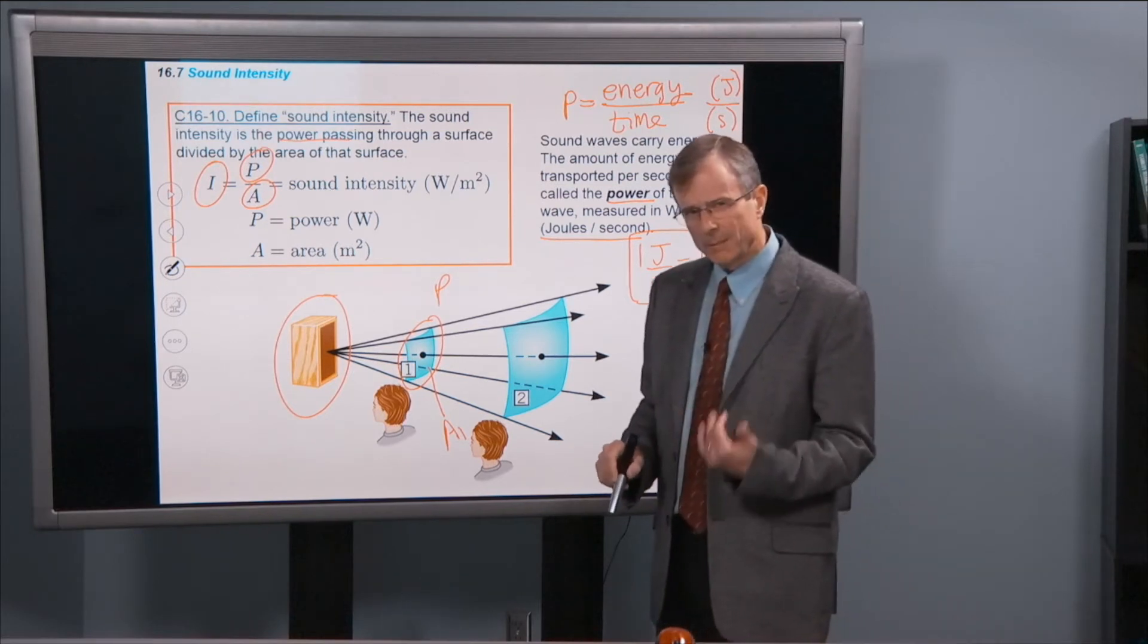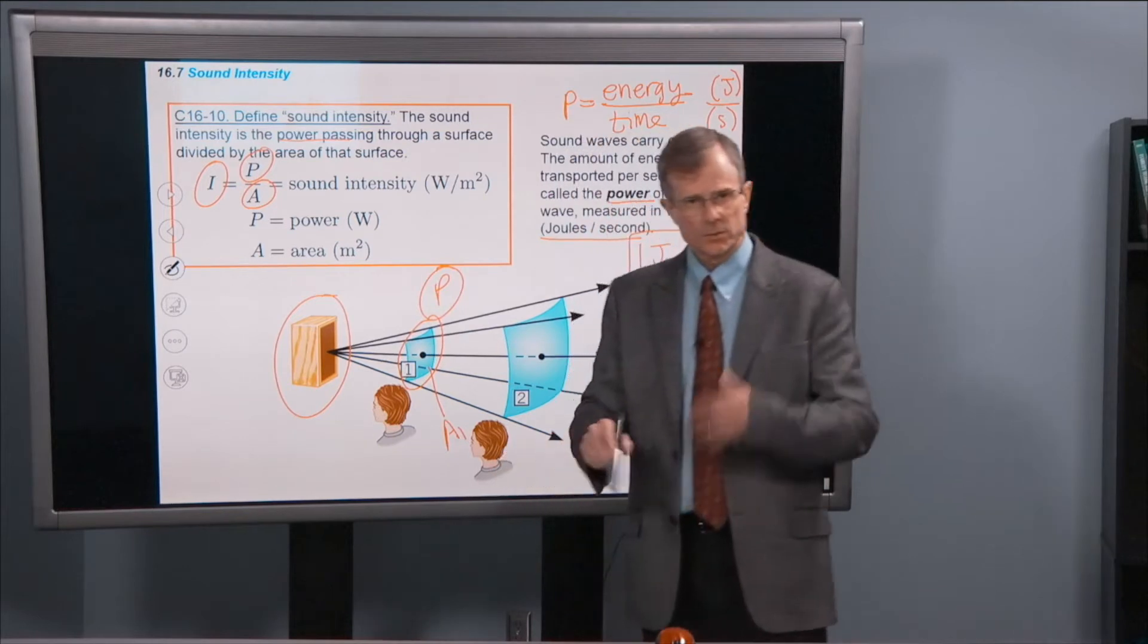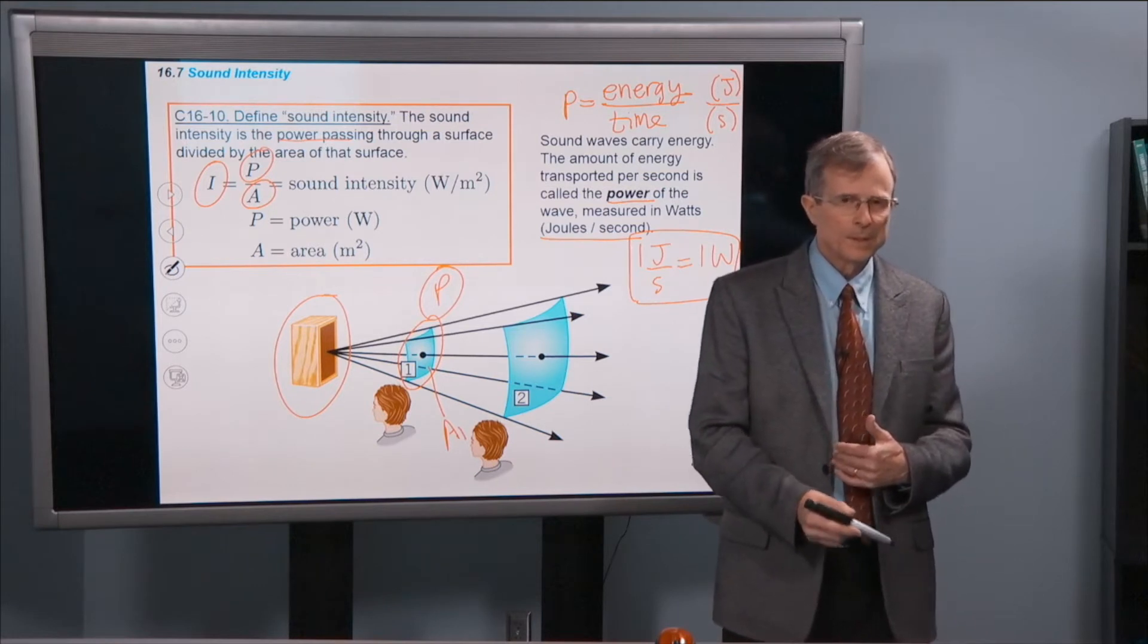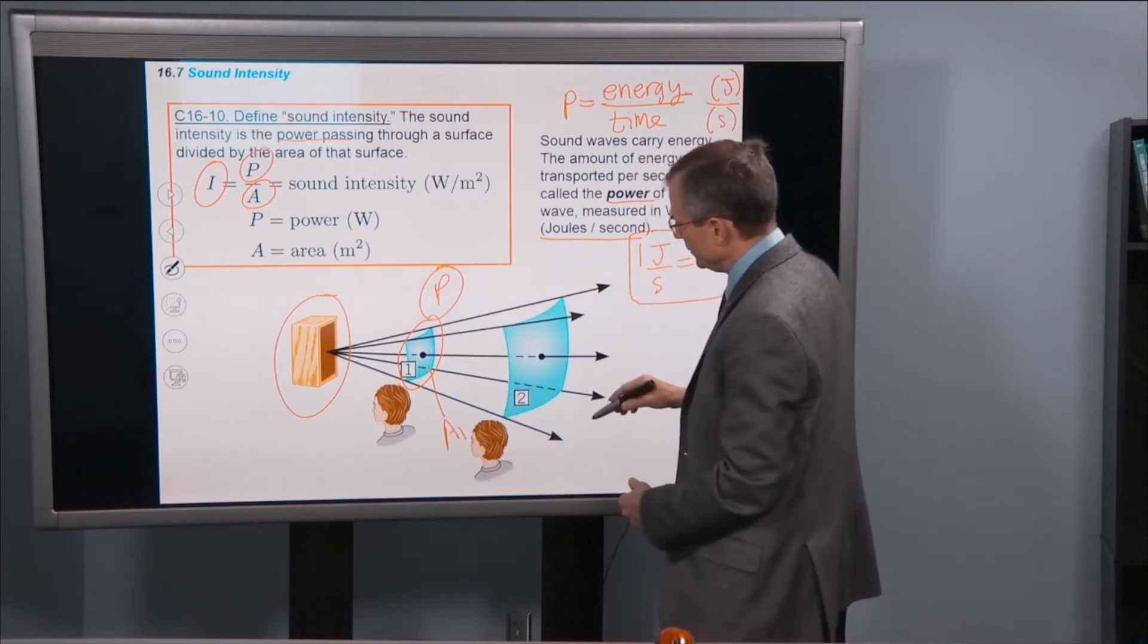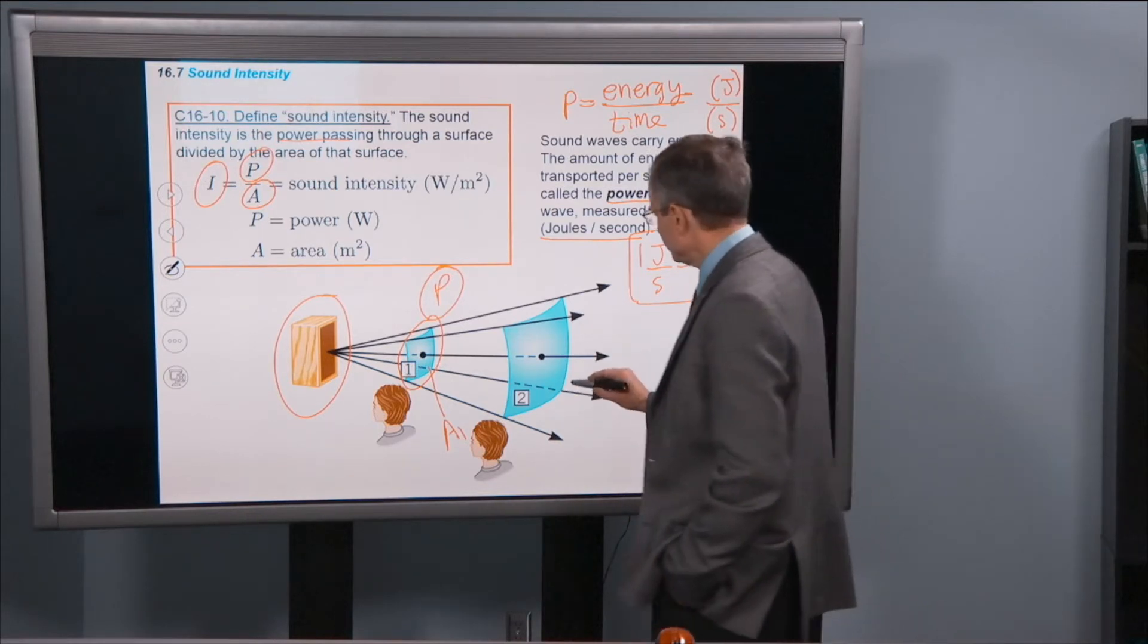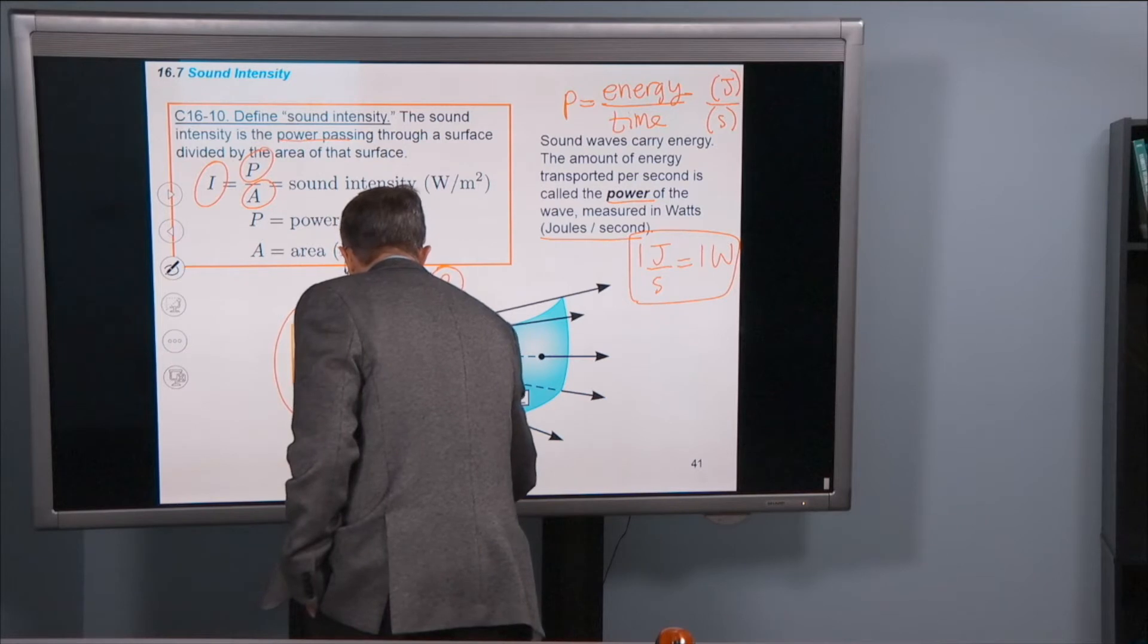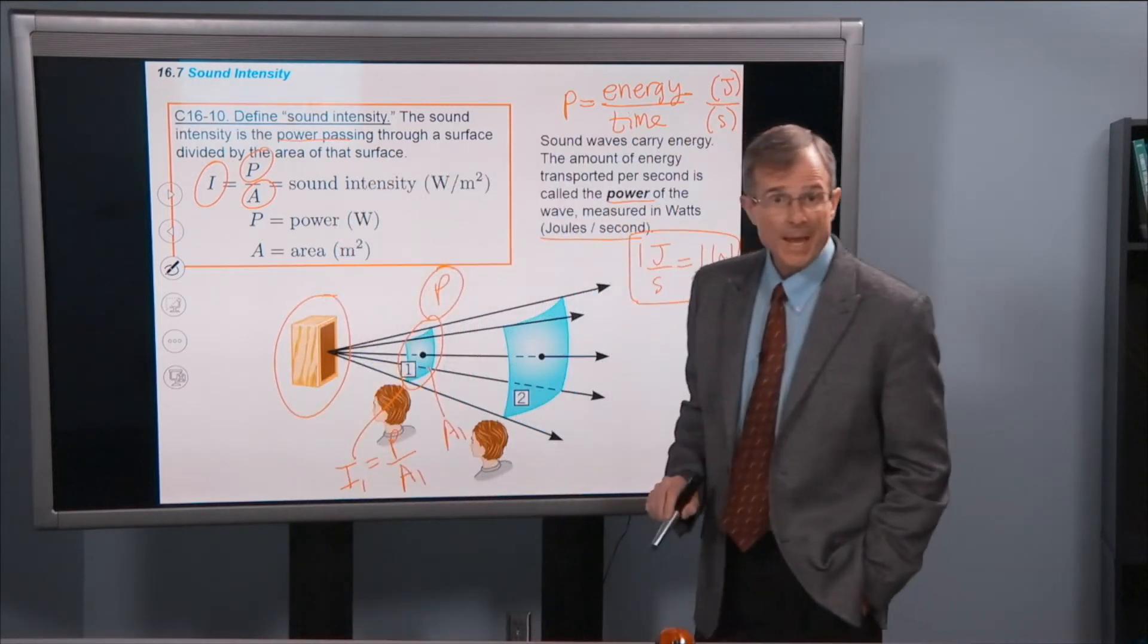And so what we're talking about here for intensity is that power, joules per second, energy per unit time, divided by the area. So as this wave propagates out from the speaker, it's spread out over a larger area. And so the intensity here, at point one, is the power spread out over area A1.